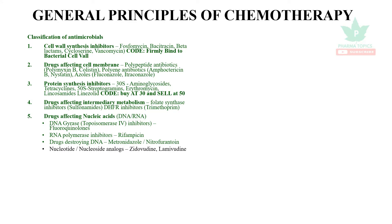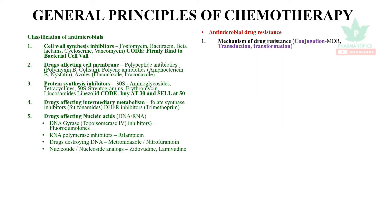Antimicrobial resistance can occur by three mechanisms: conjugation, which causes multiple drug resistance, and transduction and transformation. The reasons include decreased affinity of the target — for example, alteration of penicillin-binding proteins makes penicillins and cephalosporins resistant.